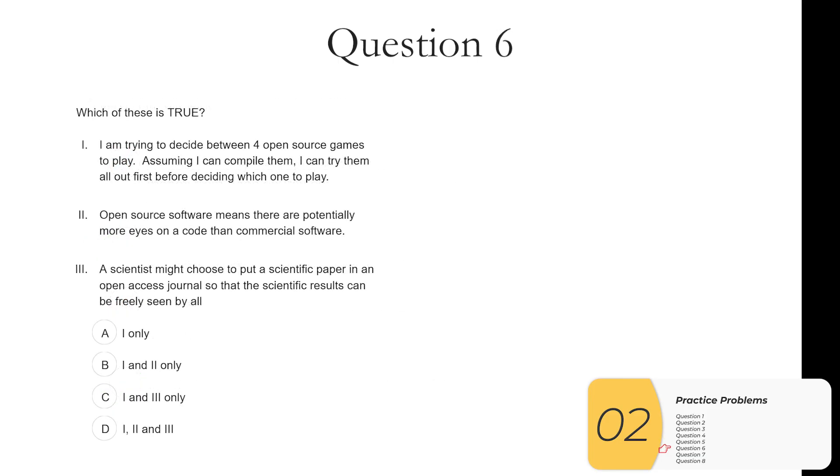Question six. One of these is true. One. I'm trying to decide between four open source games to play. Assuming I can compile them, I can try them all out first before deciding which one to play. This one is definitely true. That's the whole idea behind open source. You can see the source code and then if you can compile it, you can compile it and make it run. Two. Open source software means that there are potentially more eyes on a code than commercial software. This one is also true. Open source software again means that the code is open to all to see, so anybody can look at it and potentially you have more eyes on that software.